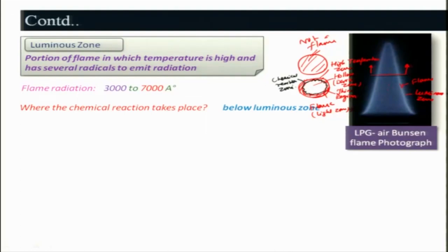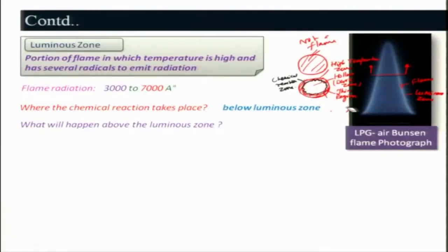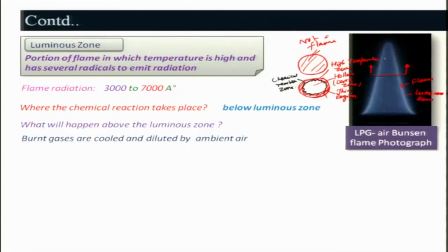Keep in mind that it will not only be happening here; as we proceed we will see that the reaction will be occurring in a little thicker zone. However, the predominant reactions where the heat release will be occurring will be in a narrow zone. Above the luminous zone, the burnt gases are cooled and diluted by the ambient air because of buoyancy and momentum. Some air will be entraining into this because it is an open flame, so air entrainment will be occurring from the ambient.